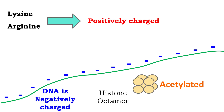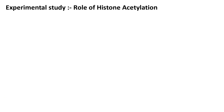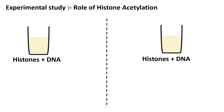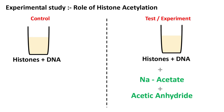However, this is just the logical explanation of histone acetylation. To support our logical explanation, we also need to verify this experimentally. To study the role of histone acetylation experimentally, histones were taken and divided into two parts. One part was used as a control. In the other part, the histones were chemically acetylated. Scientists used the knowledge of organic chemistry and incubated the mixture with sodium acetate and acetic anhydride. During this incubation, the acetyl groups are chemically transferred to the histones.